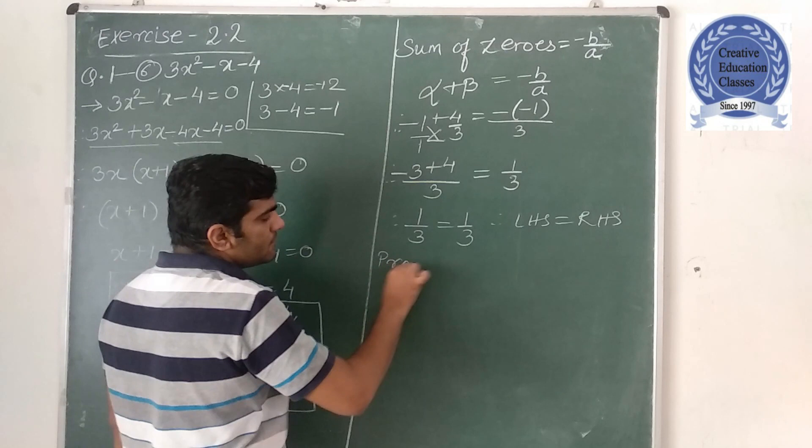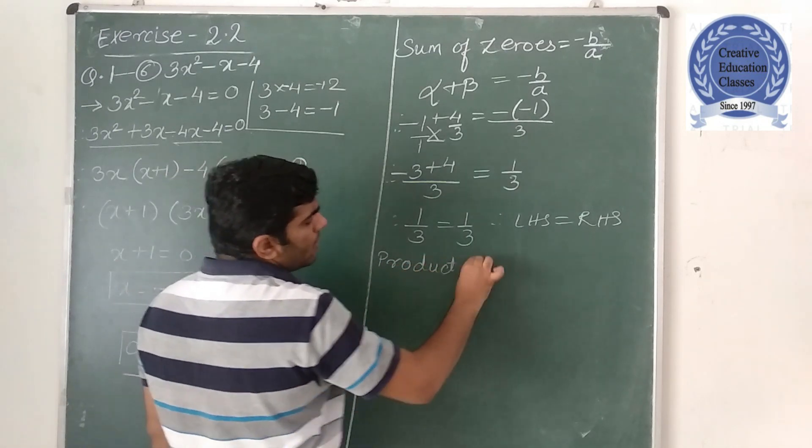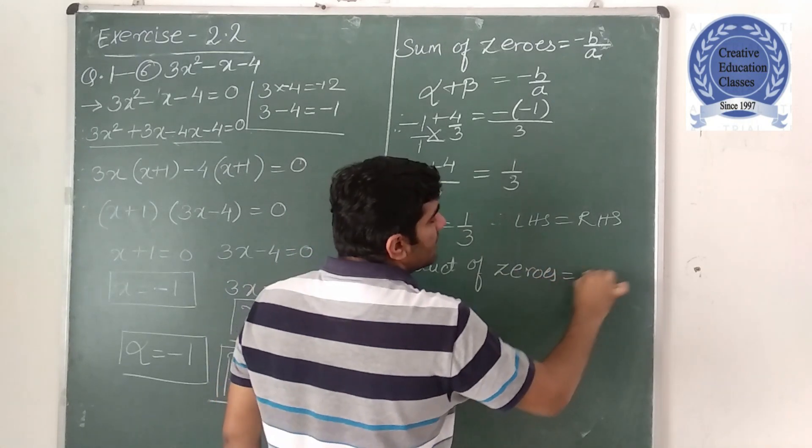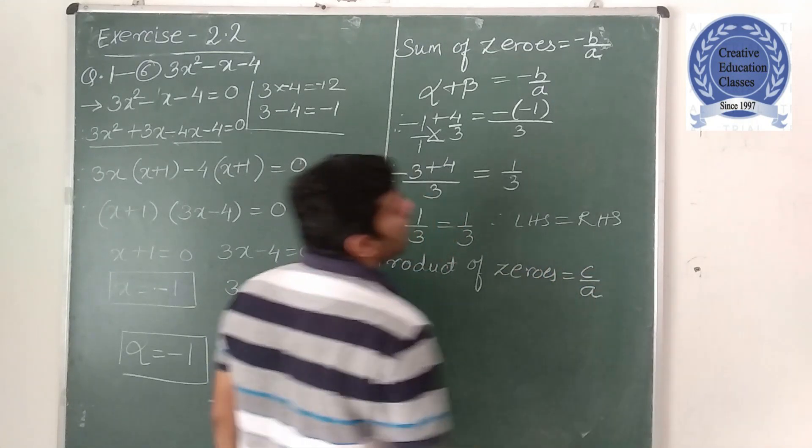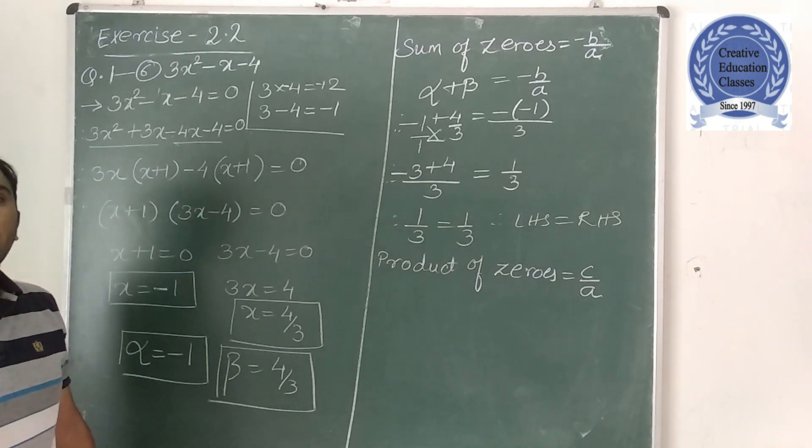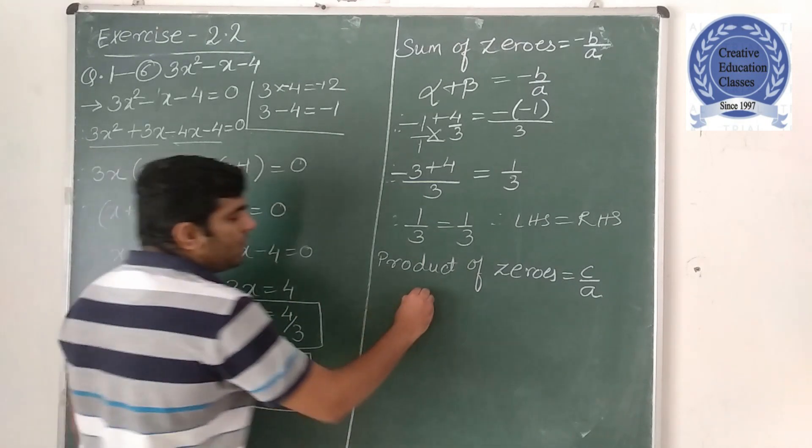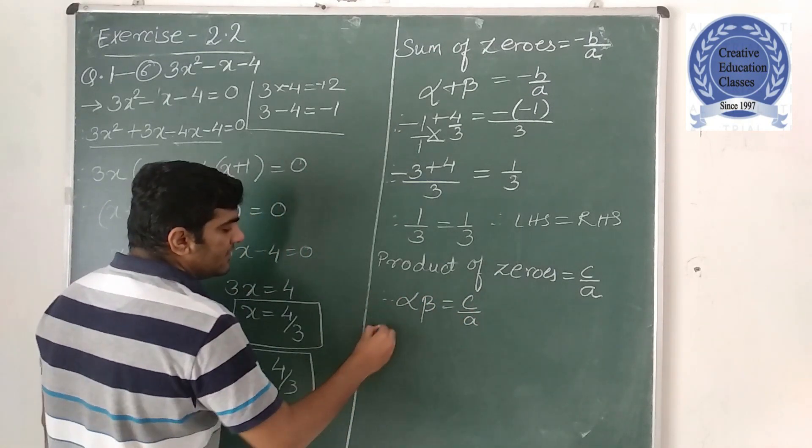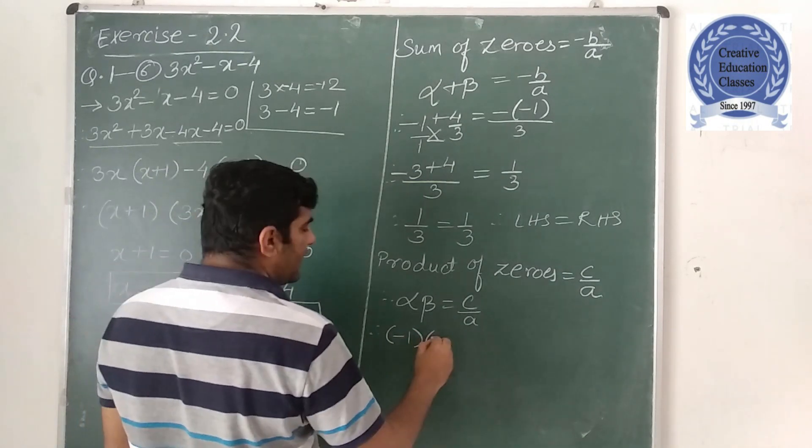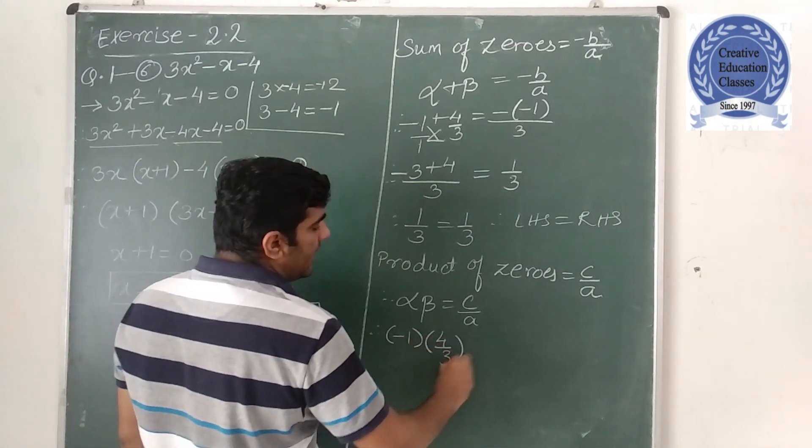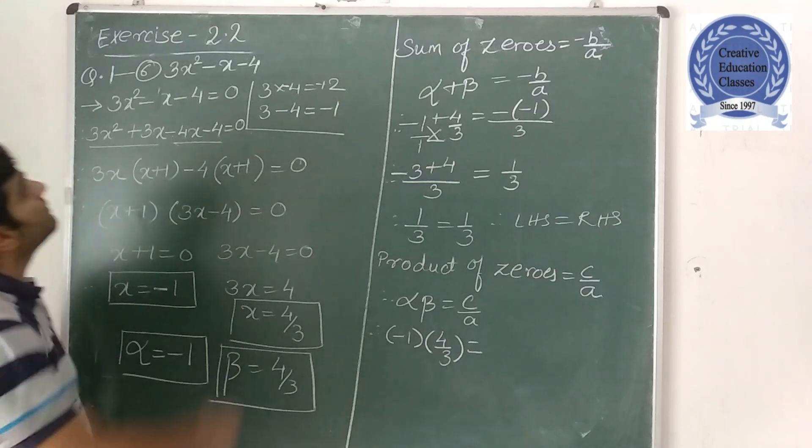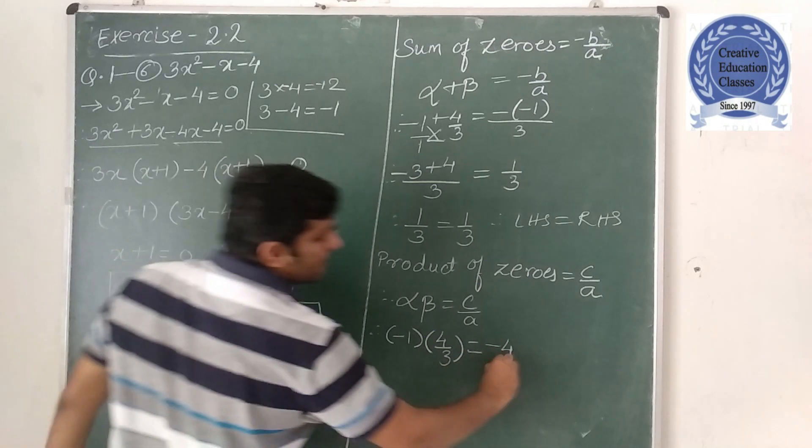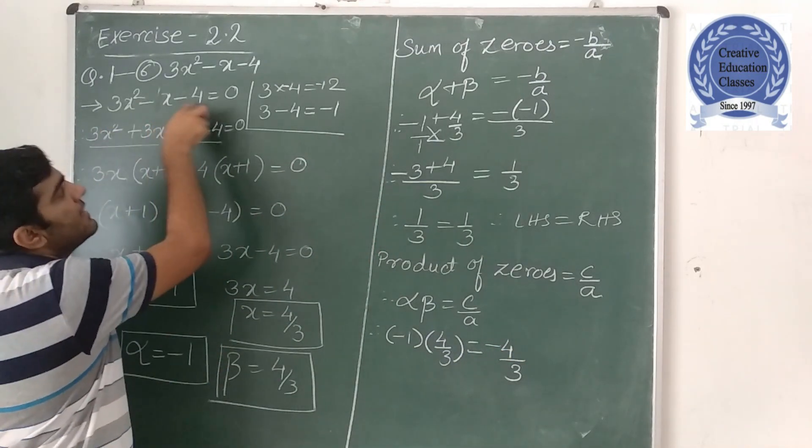Now product of zeros. Product of zeros C upon a. So alpha into beta C upon a. What is alpha? Minus 1. What is beta? 4 upon 3. What is C? Minus 4. What is A? 3. A, B, C.